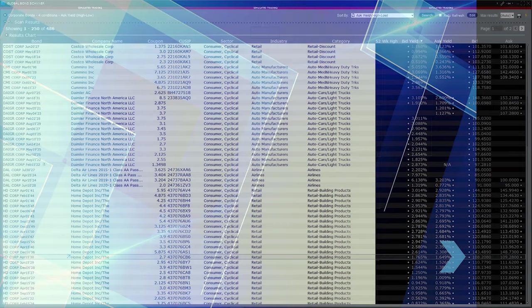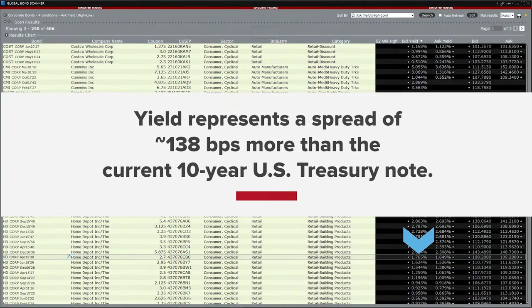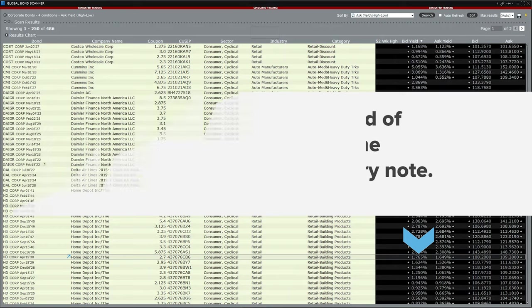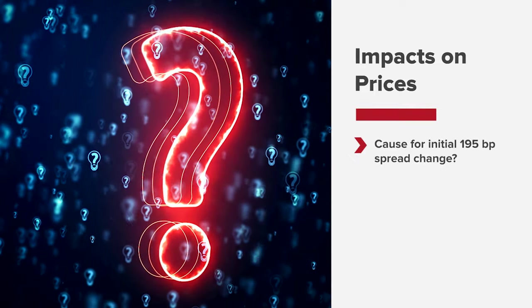According to the bond scanner, the bid yield on this bond in the secondary market is now representing a spread of about 138 basis points more than the current 10-year U.S. Treasury note. So why did the initial 195 basis point spread change?